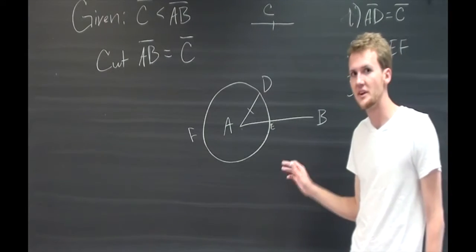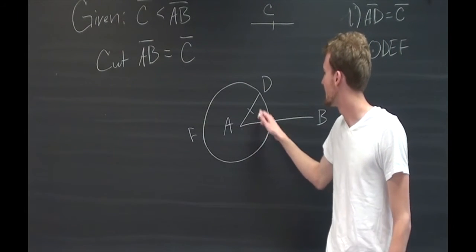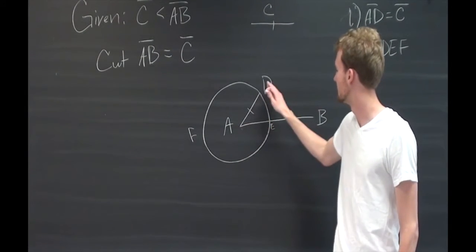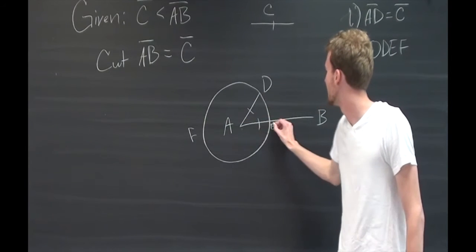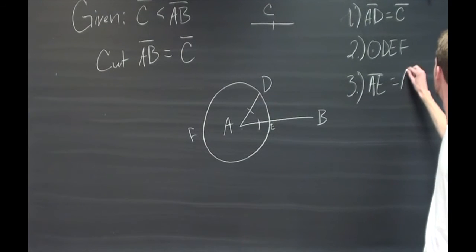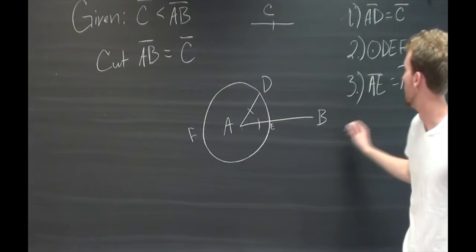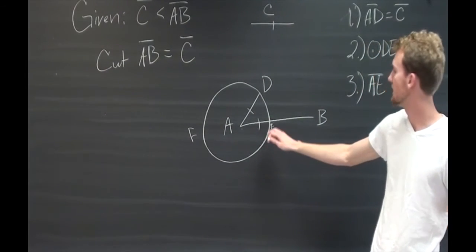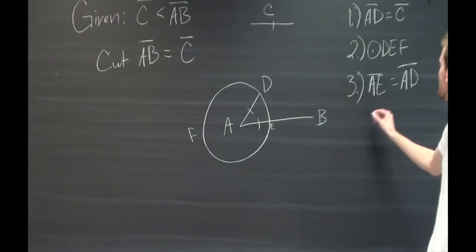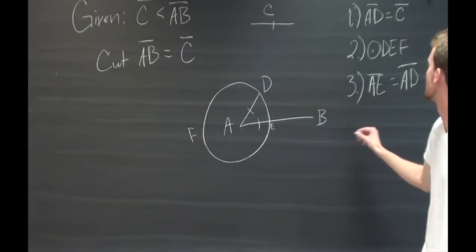Now, thirdly, we know from Definition 15, which is how we define a circle, that the radii of a circle are all going to be equal. So since AE is a radius, as is AD, we know AE is equal to AD. We then see that AE is equal to AD, and AD is equal to C, so we can say that AE is actually equal to C.